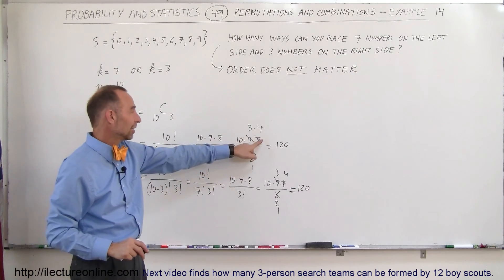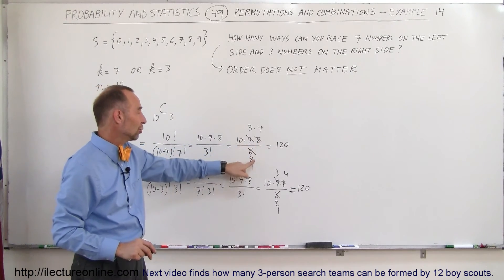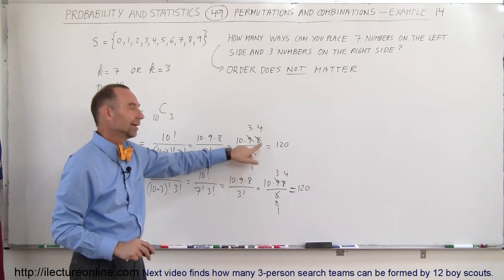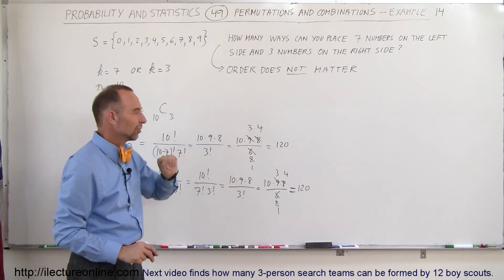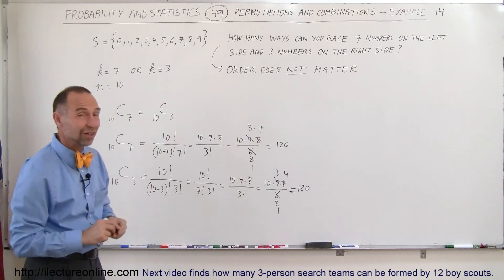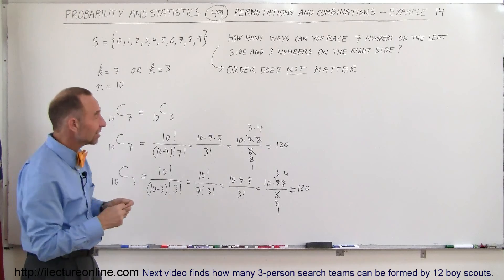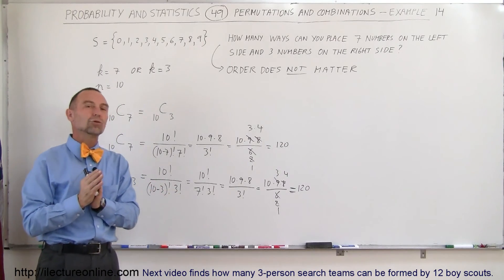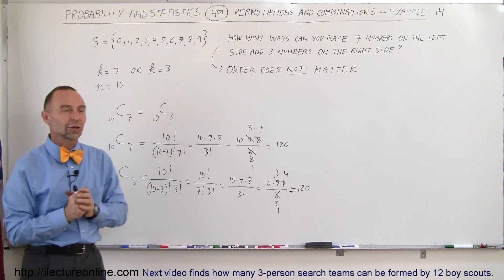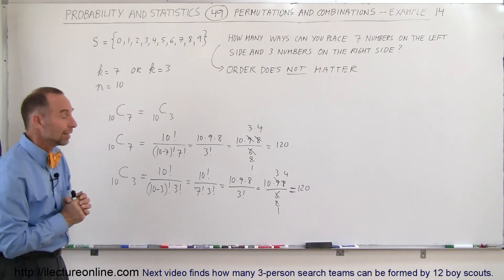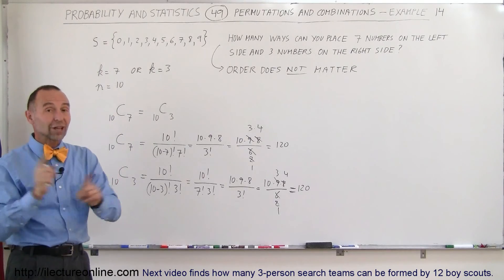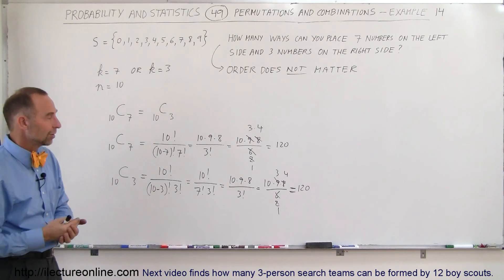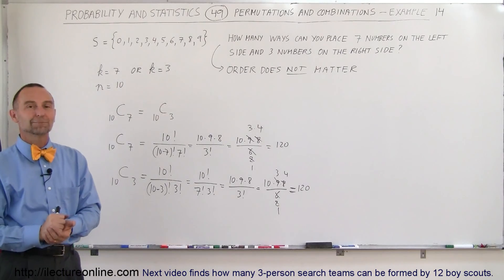My mistake was I divided 8 by 2 and got 2 instead of 4. Now we have the right answer in each case: 120 different combinations to take 10 numbers divided into two groups, one with 7 and the other with 3. Order does not matter; otherwise the number of permutations would be much greater than that. And that is how we do that.